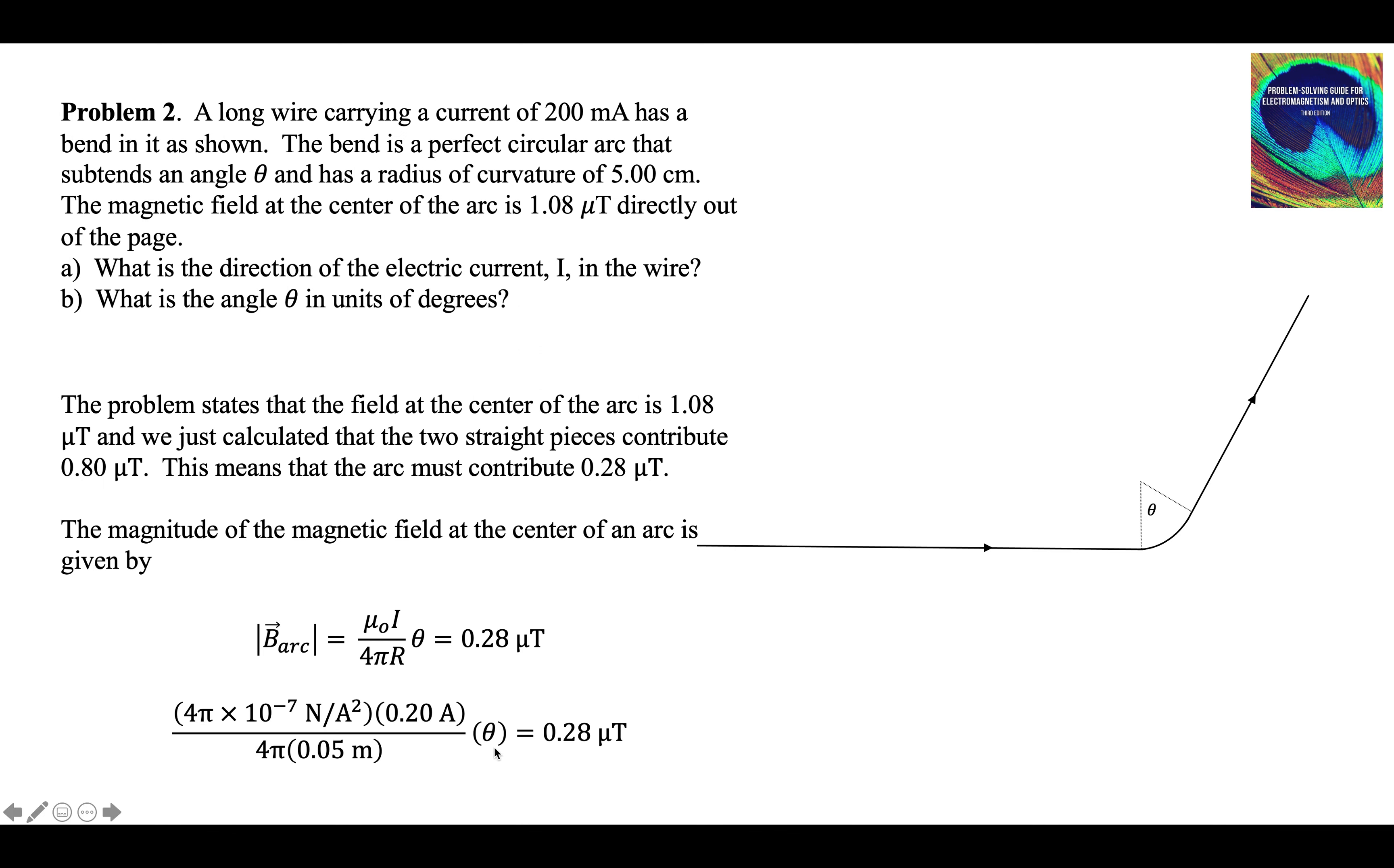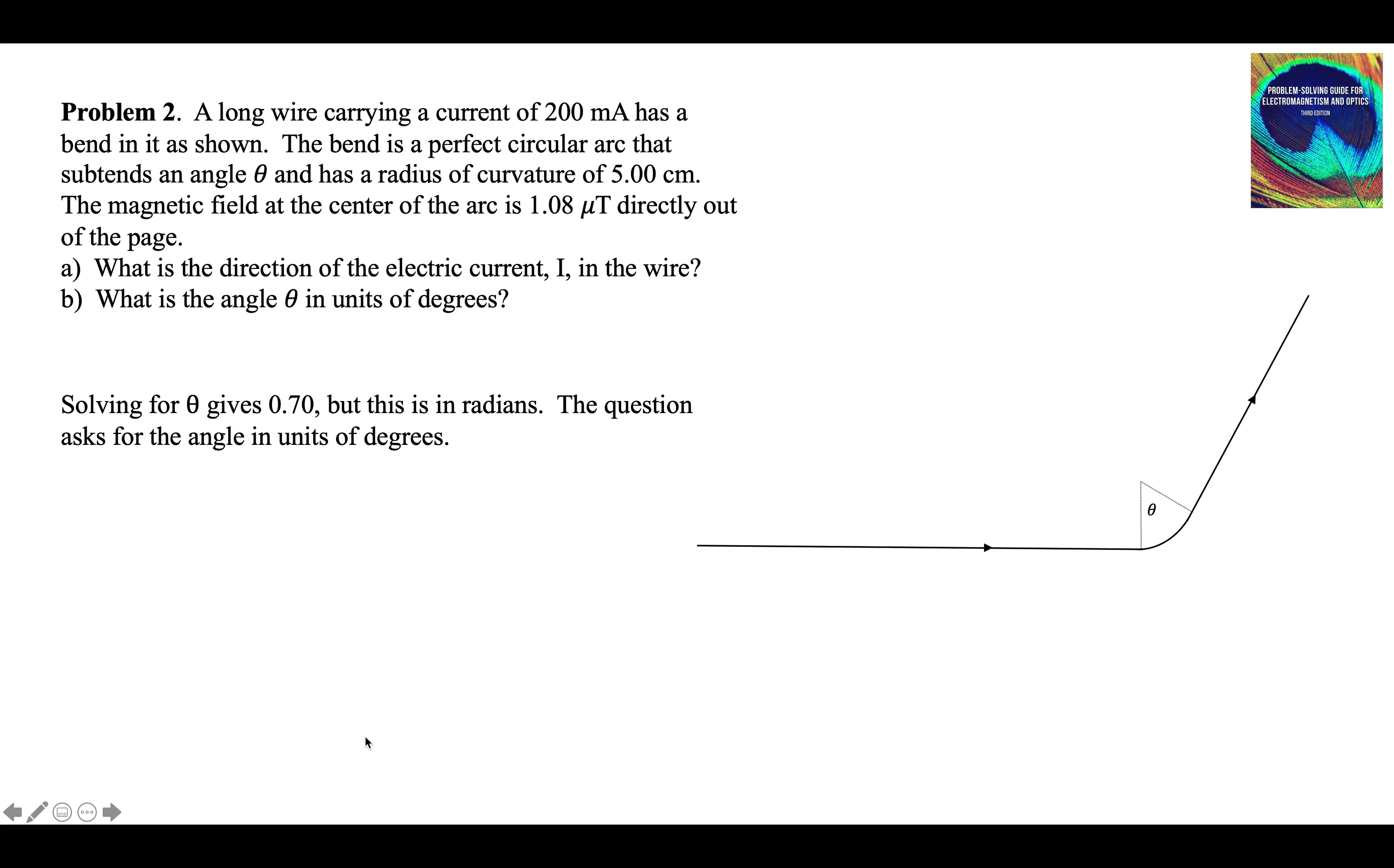Plugging in all the numbers, there's the radius of the arc, we can solve for theta, and we get 0.7. But this is in radians. The question says, what is the angle theta in units of degrees?